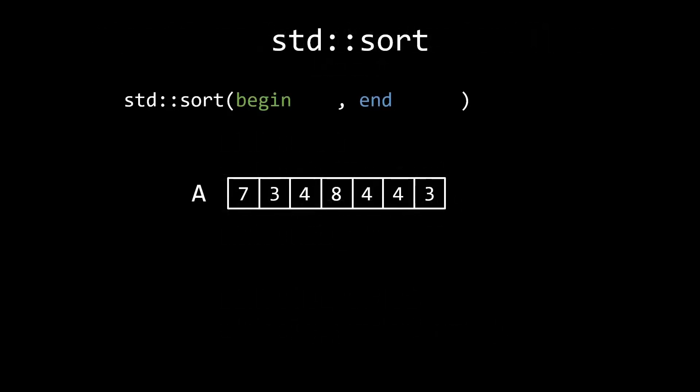We'll start simple, with the StandardSort. StandardSort accepts an input range using two random access iterators, and then sorts the range. For example, if we want to sort this whole array a, we can simply pass a.begin and a.end.